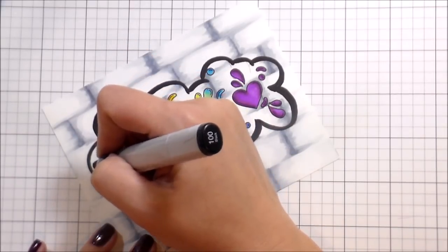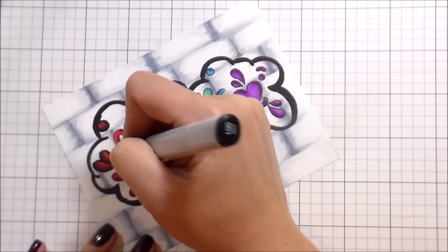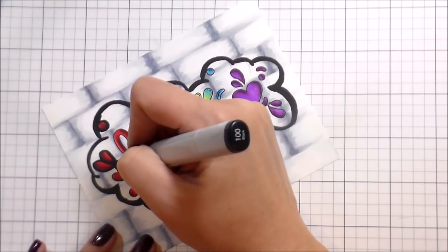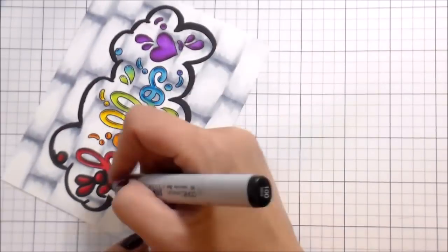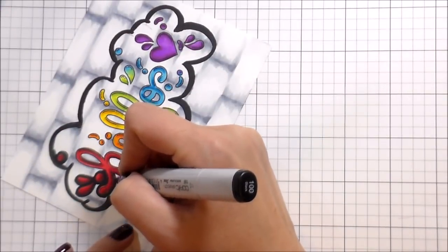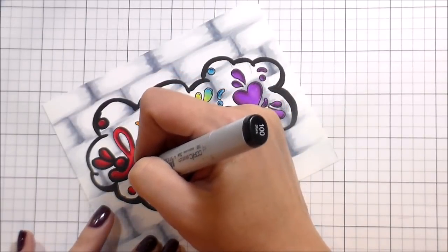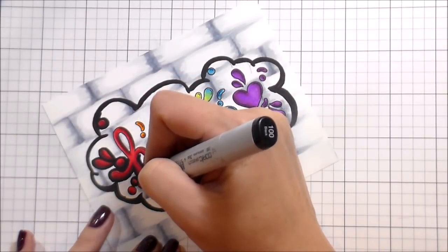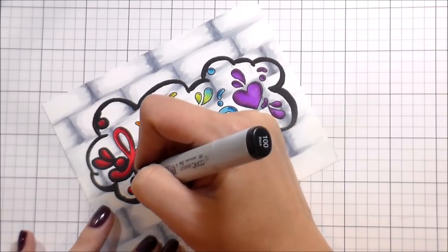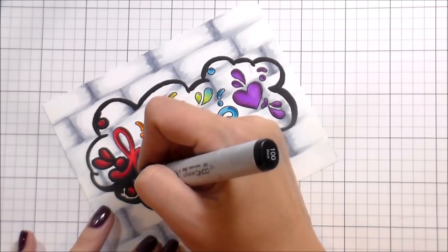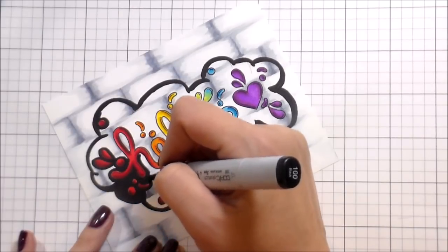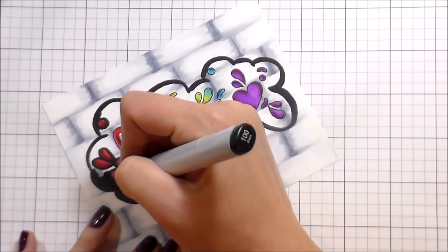Because of that pencil lead being shiny, you'll be able to see it even though you put the dark marker over it. Filling this in, I find it much easier to go ahead and put a safety outline around my image and then start to fill in the large portions of color. That just seems to work best for me, but you do whatever works best for you.